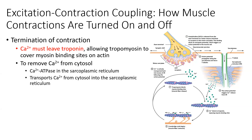In order for termination of contraction to be brought about, calcium must leave troponin and go back into the sarcoplasmic reticulum — it must leave the cytosol, and this is done actively. There are active calcium ATPase pumps on the sarcoplasmic reticulum that pump calcium back into the SR. This ceases muscle contraction as actin returns to its relaxed state and tropomyosin filaments cover up the myosin binding sites once again.